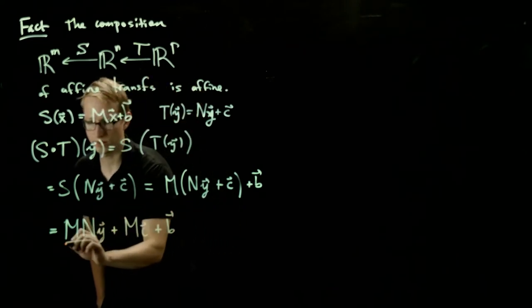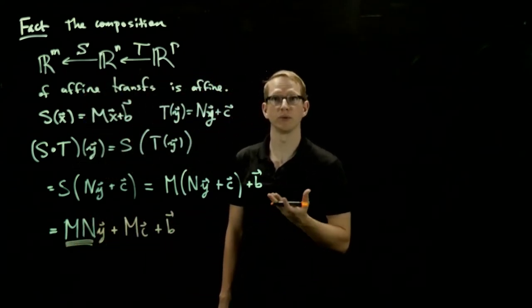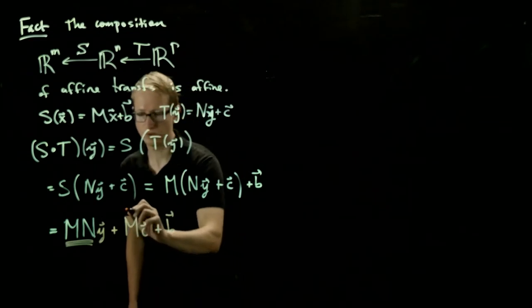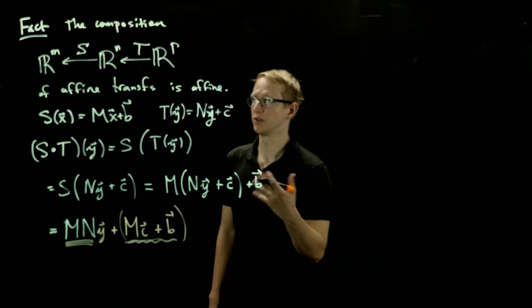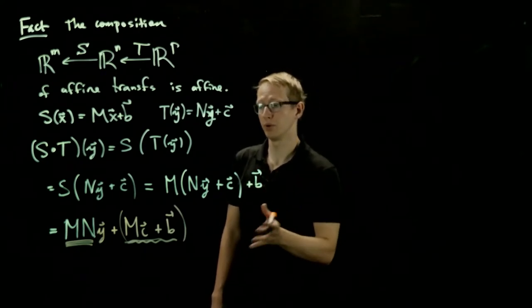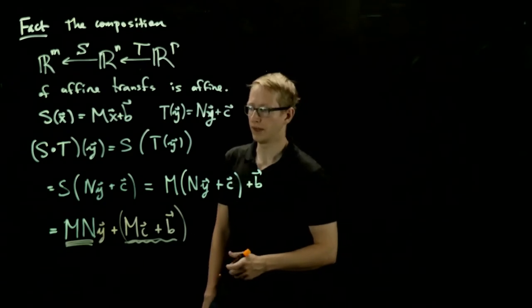So the associated matrix that we get is actually just the multiplication of the matrices that we started with, and the associated vector B is some interesting combination of the original vectors B and C, but also with the matrix M.